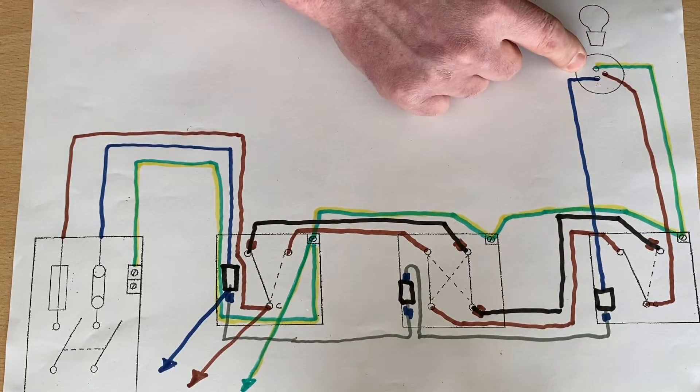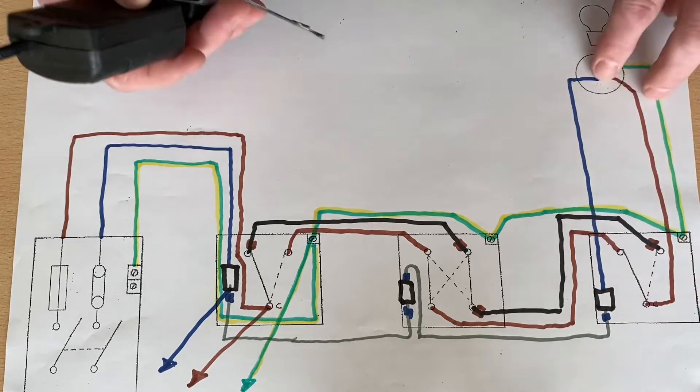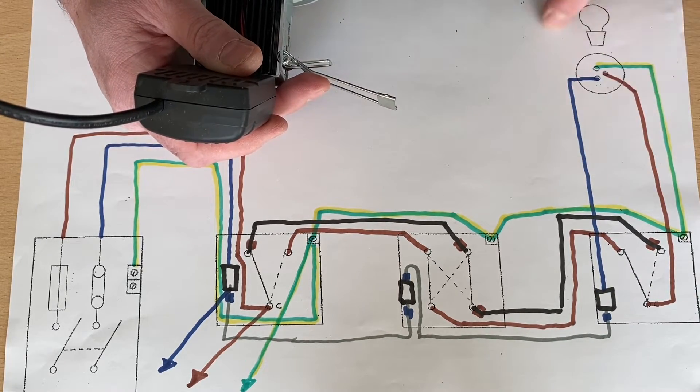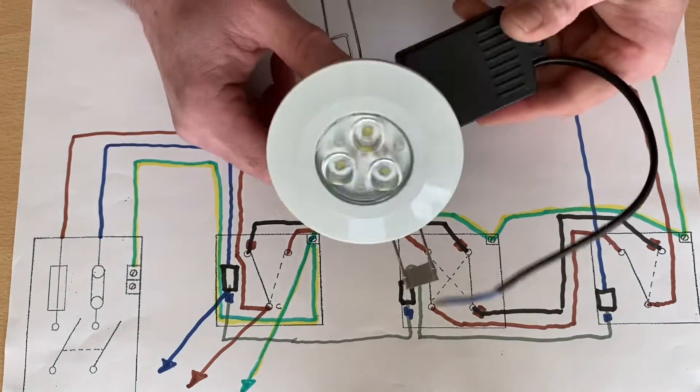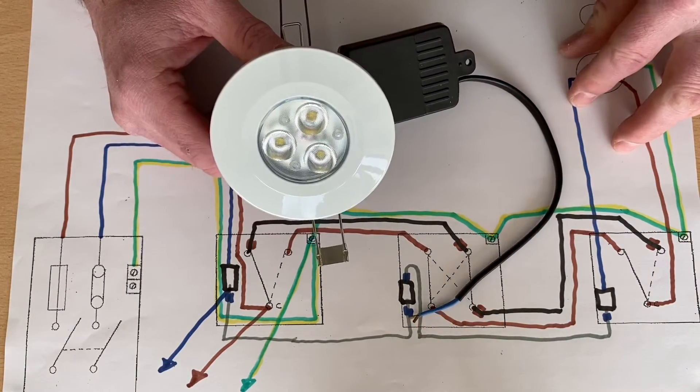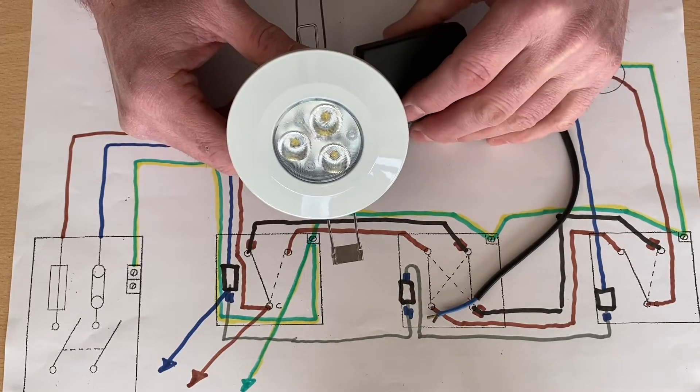Lighting points. We're probably used to where we're only bringing one cable up, which has a switching line, a neutral and a CPC to a lighting point. I'm probably used to fitting LED down lights in that area. We'll reduce the number of cables here, making it easier for us to make connections.